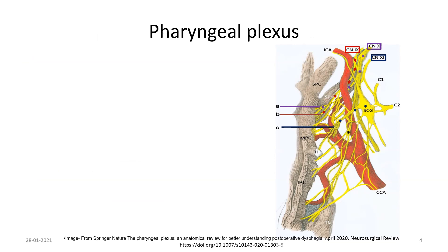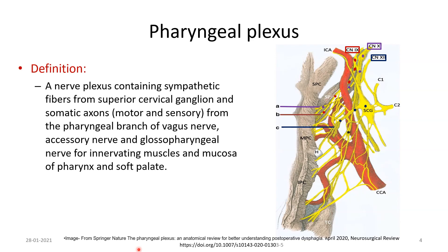The pharyngeal plexus is a nerve plexus that contains sympathetic fibers from the superior cervical sympathetic ganglion — which you can see in the picture with nerve fibers following from it — and somatic axons, both motor and sensory, from the pharyngeal branch of the vagus nerve.